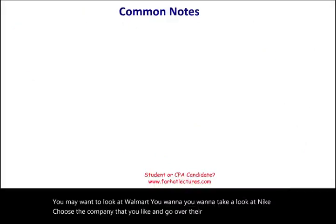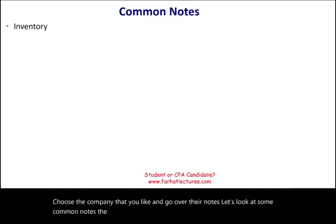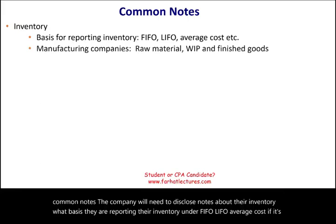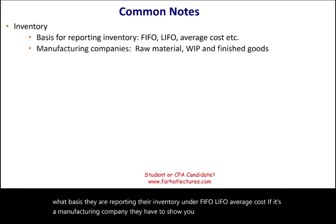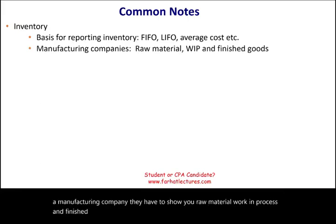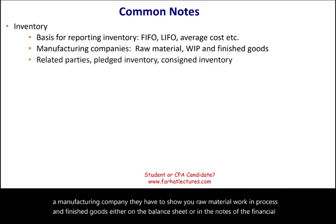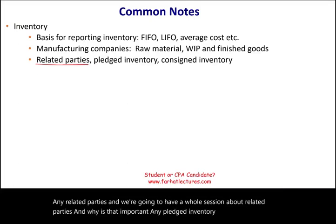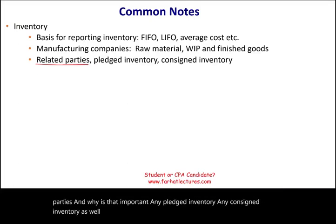Let's look at some common notes. The company will need to disclose notes about their inventory: what basis they are reporting under — FIFO, LIFO, or average cost. If it's a manufacturing company, they have to show you raw material, work in process, and finished goods, either on the balance sheet or in the notes. Also any related parties, any pledged inventory, any consigned inventory, and other items relevant to the users.